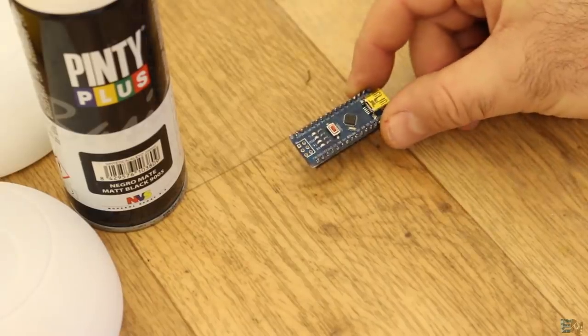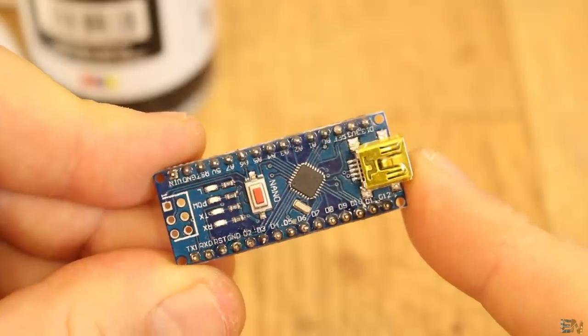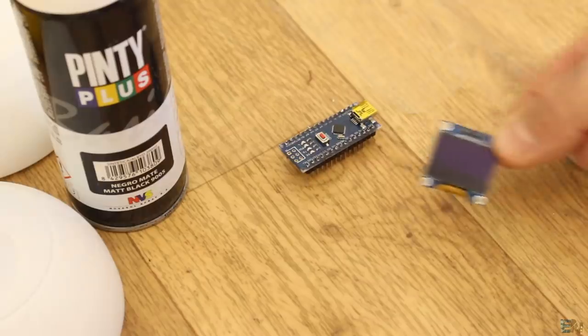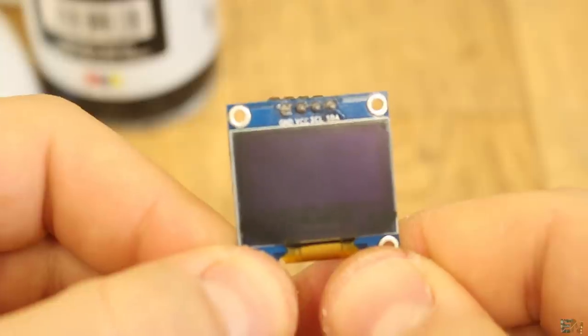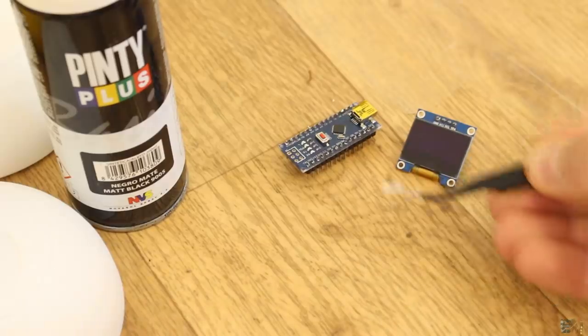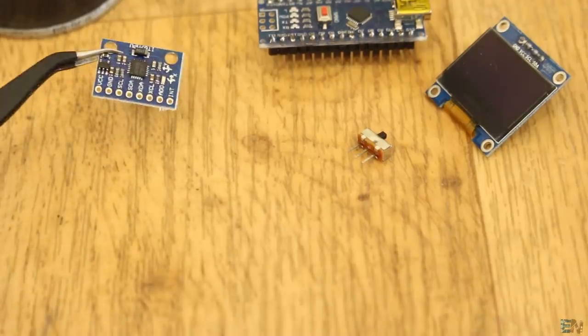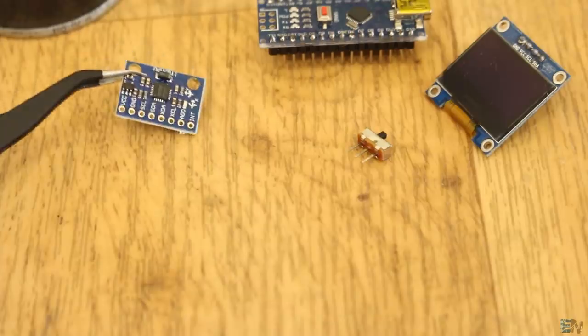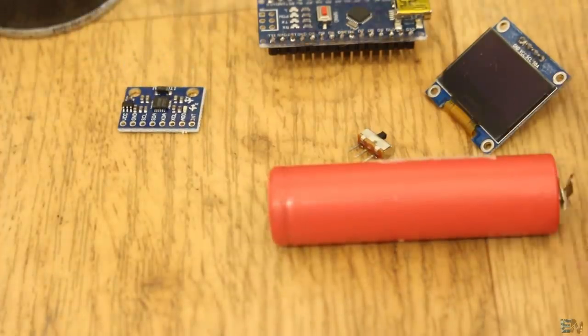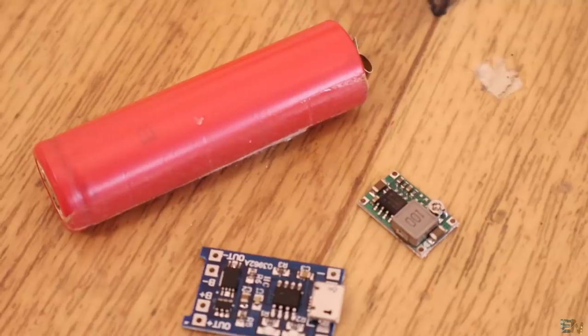We also need the Arduino Nano to control everything. We need the I2C OLED display to show the text, a sliding switch to turn on the entire circuit, the MPU 6050 gyro module to detect rotations, an 18650 lithium ion battery, and a USB charging module.